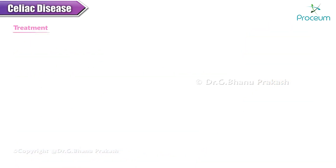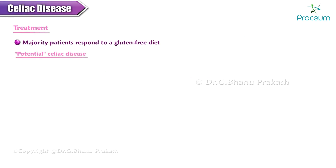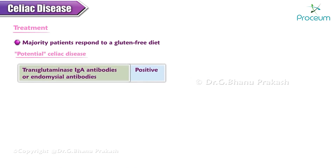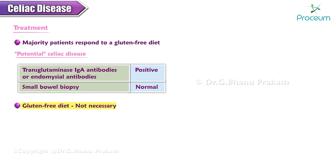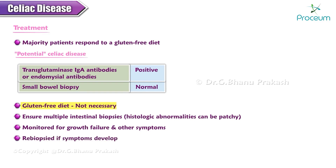The majority of patients with celiac disease respond to a gluten-free diet. Potential celiac disease refers to patients who have positive serologic tests — IgA tissue transglutaminase antibodies or endomyseal antibodies — but have normal small bowel biopsy. A gluten-free diet is not necessary for such patients if they are asymptomatic. However, it is important to ensure that the evaluation included multiple intestinal biopsies since histologic abnormalities can be patchy. These patients should be carefully monitored for growth failure and other symptoms suggesting active celiac disease, and re-biopsied if symptoms develop.